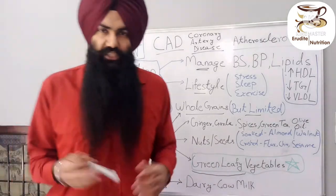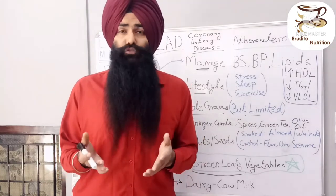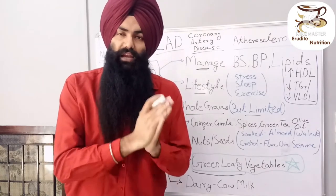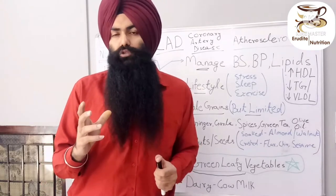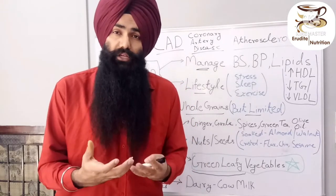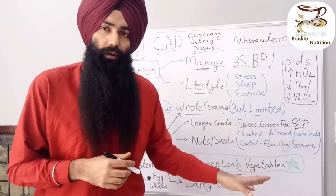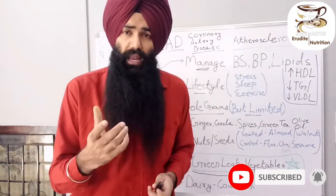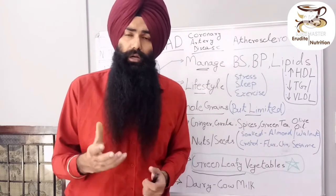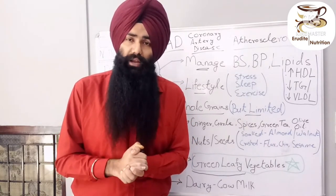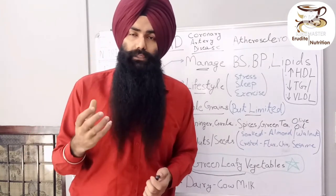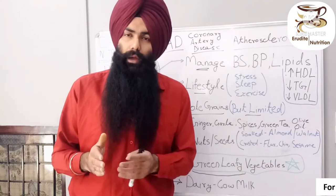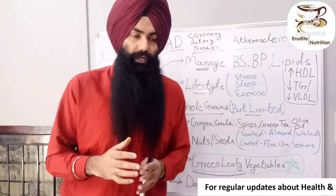For dairy, choose cow milk over buffalo milk due to lower fat content, since we want to keep calories in check and reduce stored triglycerides. Avoid milk paneer, cheese, and heavy creams. You can have a small cup of milk, a small glass of lassi or buttermilk, or a small bowl of curd. A heart patient should use small portions — small cup, small bowl, small glass — and can have dairy multiple times a day but not in large quantities in one sitting.